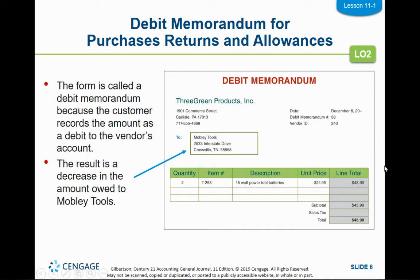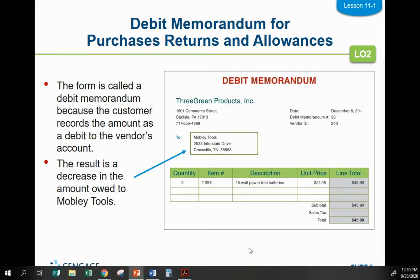The debit memo is going to have the list of what you're returning, how many you're returning, the unit price, the total price, and who it's going to. The result is going to be a decrease in what you owe to the vendor — Mobley Tools in this example.